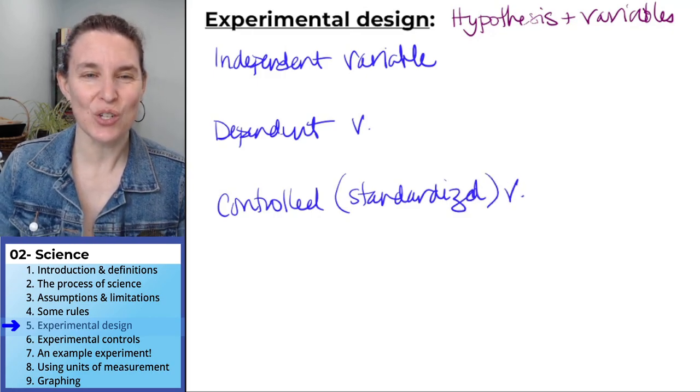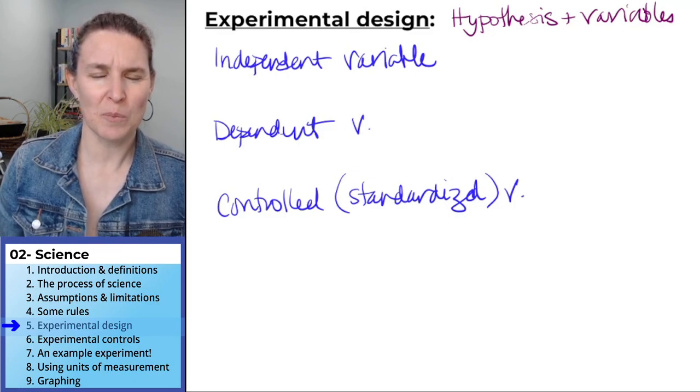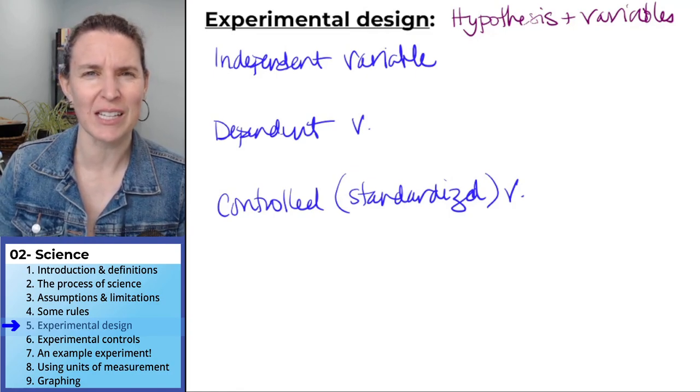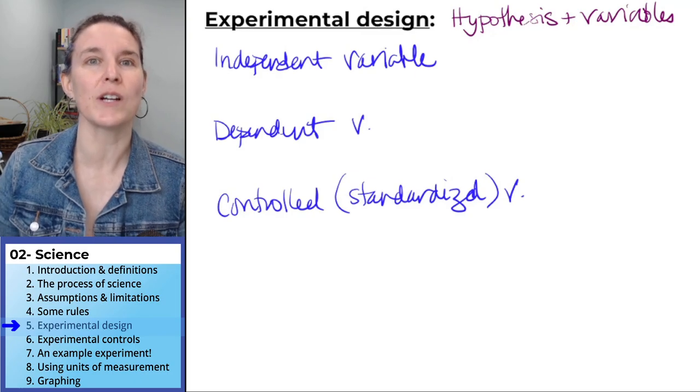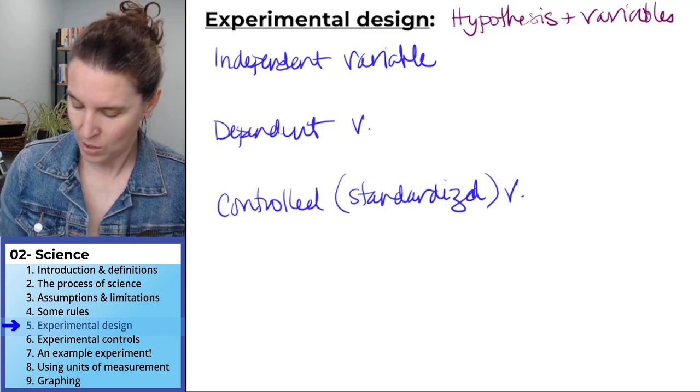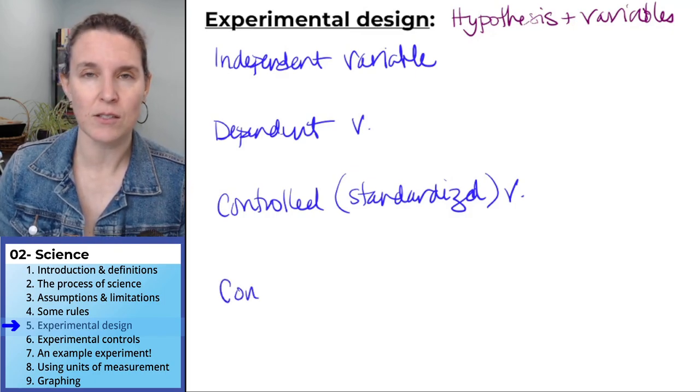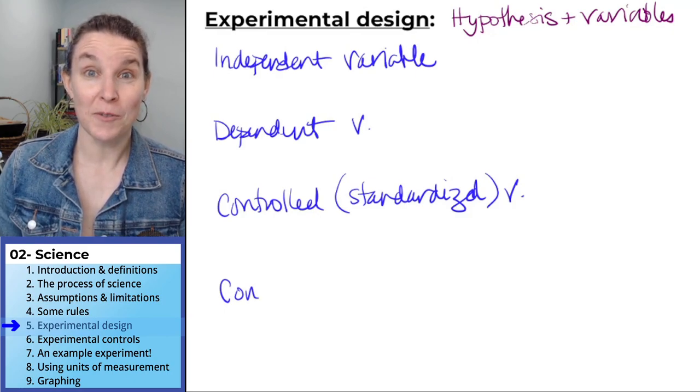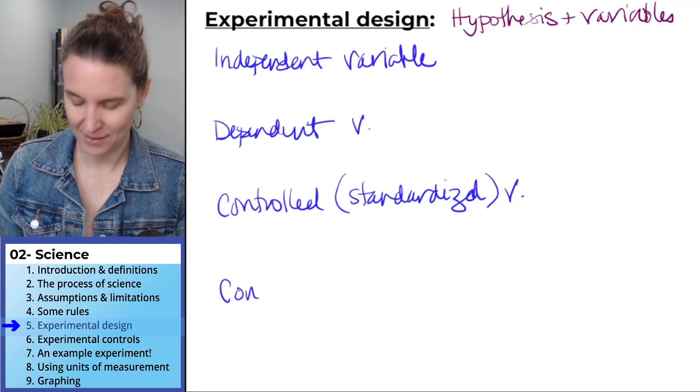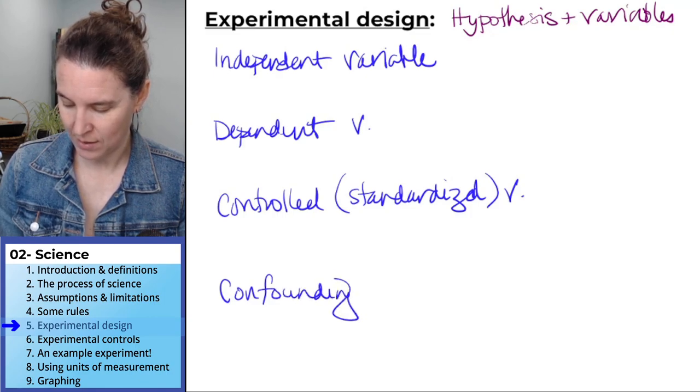I tend to use the word standardized variable, but when I look around, most places are calling it a controlled variable, so I feel like controlled might be a little more intuitive. And then the last one I think is also important, and its name is going to tell you what it is. It's a confounding variable.